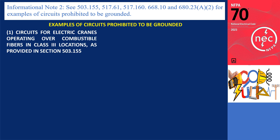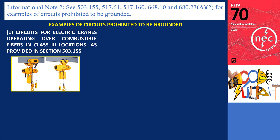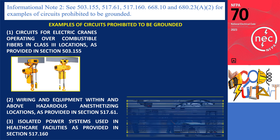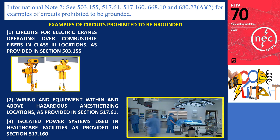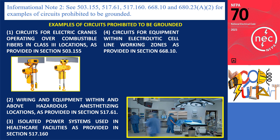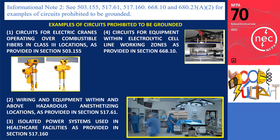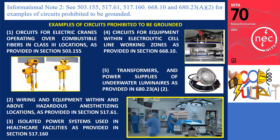Additionally, in informational note number two, circuits covered in the following sections are prohibited from being grounded: 1. Circuits for electric cranes operating over combustible fibers in class three locations, as provided in section 503.155 — the purpose is to eliminate sparks or hot particles due to a phase-to-ground fault. 2. Wiring and equipment within and above hazardous anesthetizing locations, as provided in section 517.61. 3. Isolated power systems used in healthcare facilities, as provided in section 517.160. 4. Circuits for equipment within electrolytic cell line working zones, as provided in section 668.10. 5. Transformers and power supplies of underwater luminaires, as provided in section 680.2382.